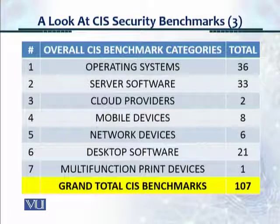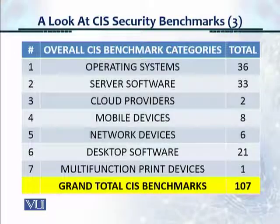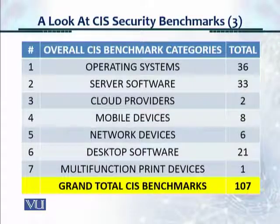This is a snapshot view of the overall categories. There are seven categories with 107 overall individual benchmarks for the seven categories. We've picked up this one from the network devices category, which is category number five. Overall, there were six benchmarks, and we've picked up one control, which we'll show you.